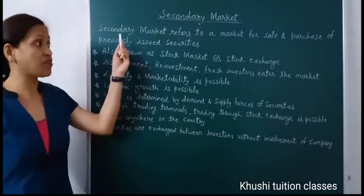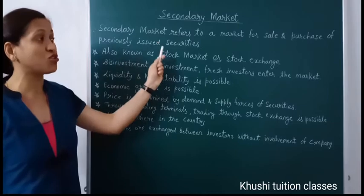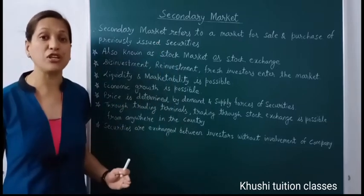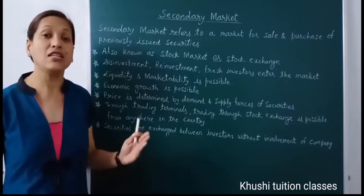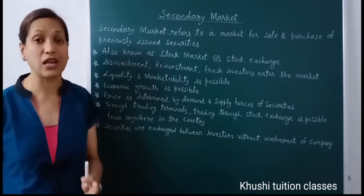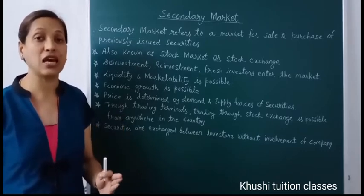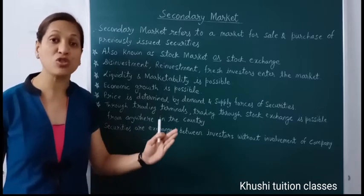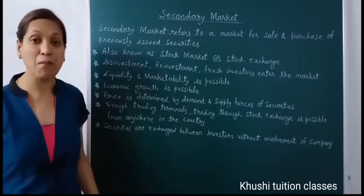Secondary market refers to a market for sale and purchase of previously issued securities. When a company issues securities for the first time, it is the primary market — directly from the company to investors. But when those investors come to sell, and other investors wish to buy, that transaction takes place in the secondary market.